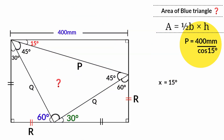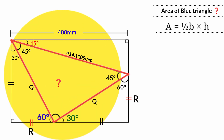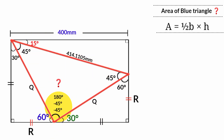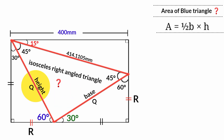Substituting into our earlier expression: P = 400mm / cos 15°, which equals approximately 414.1105mm. Now from the blue triangle, the sum of angles is 180 degrees: 180 minus 45 minus 45 equals 90 degrees. This means it is an isosceles right-angled triangle. When calculating the area of a right-angled triangle, the base and height are the two perpendicular sides. So the base equals Q and the height equals Q.